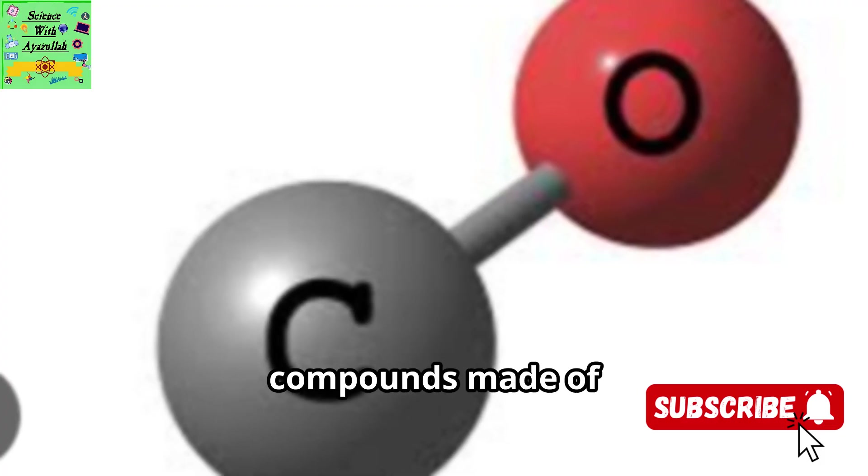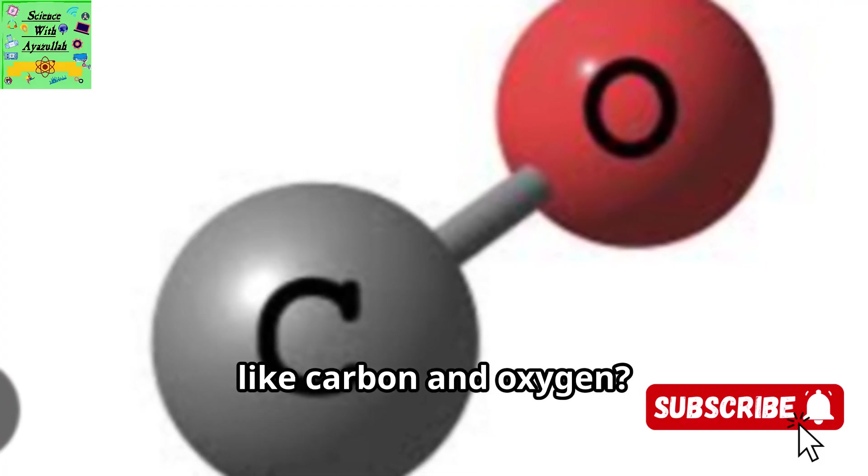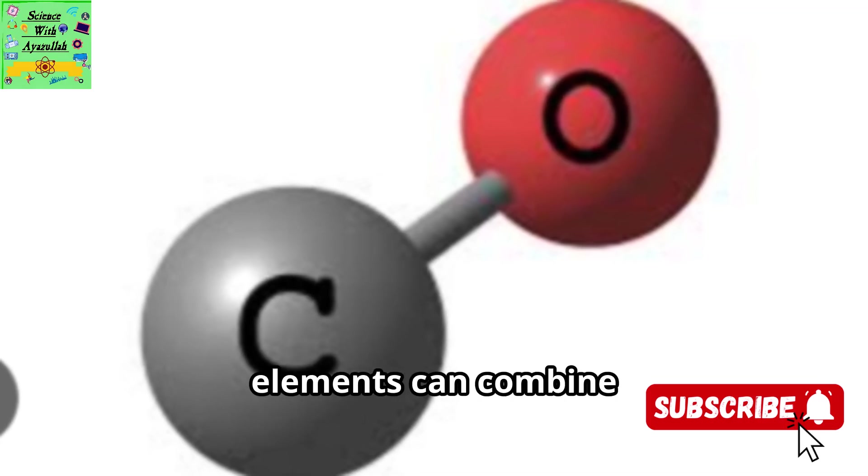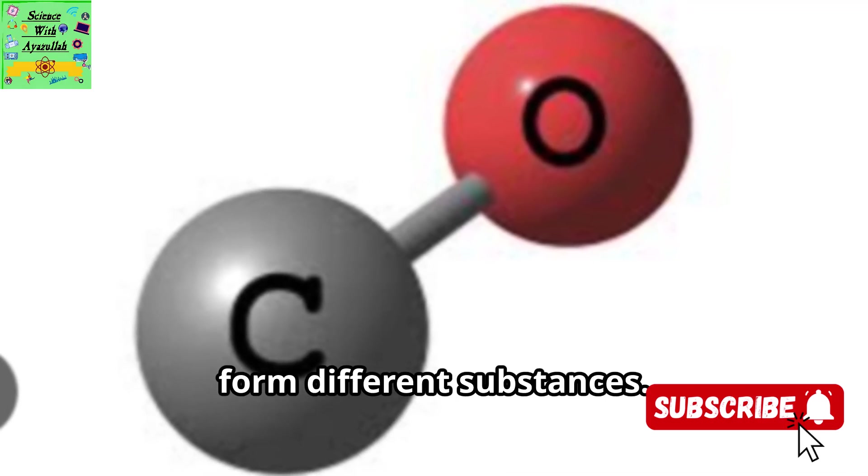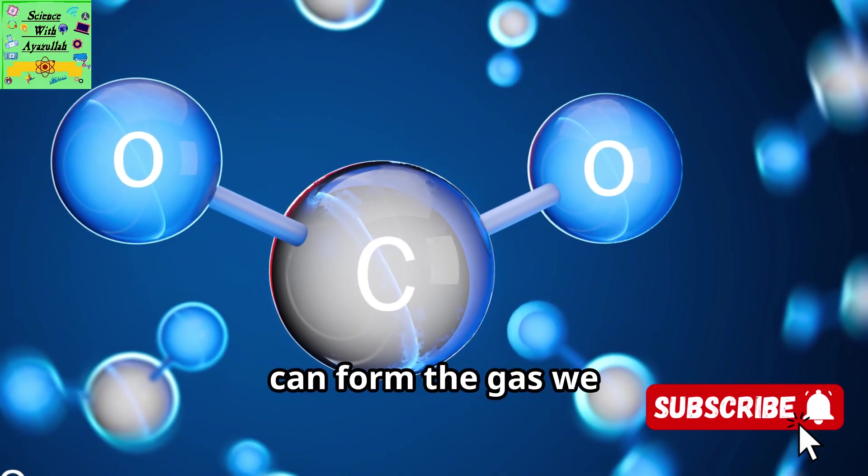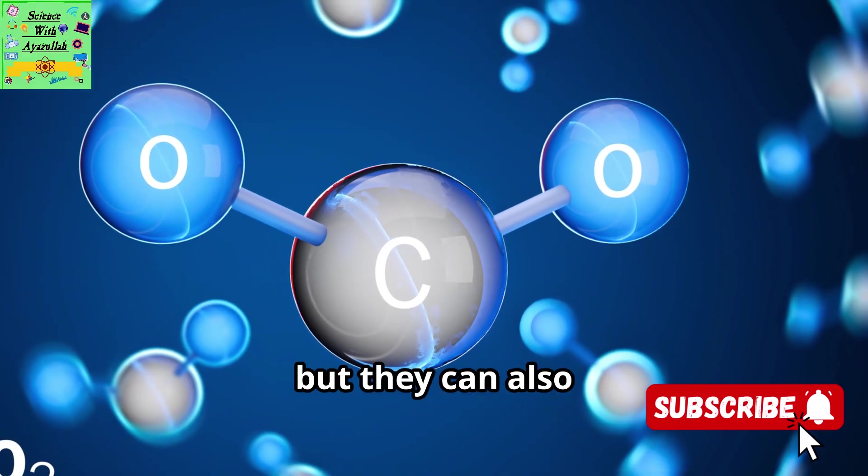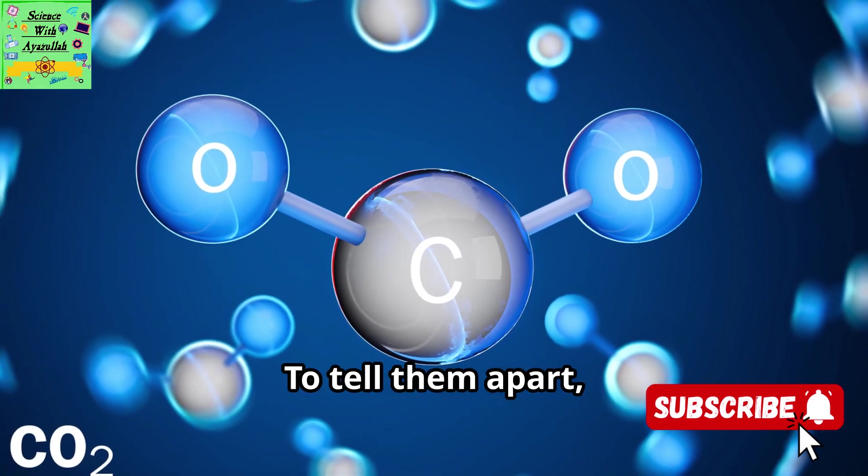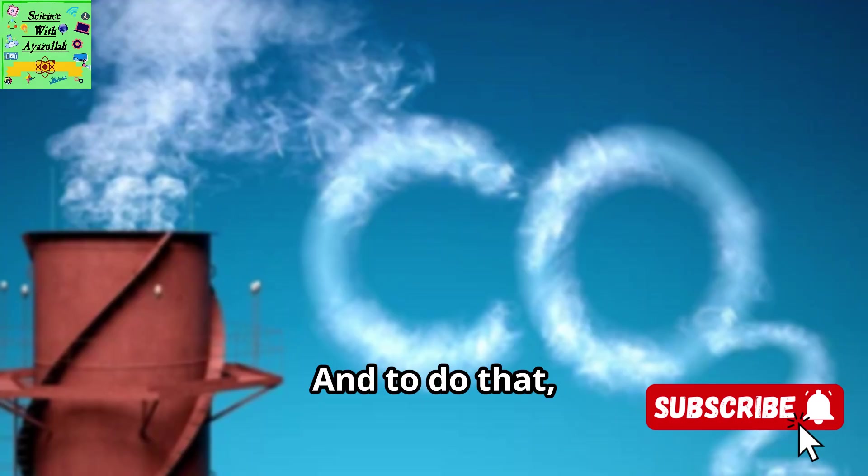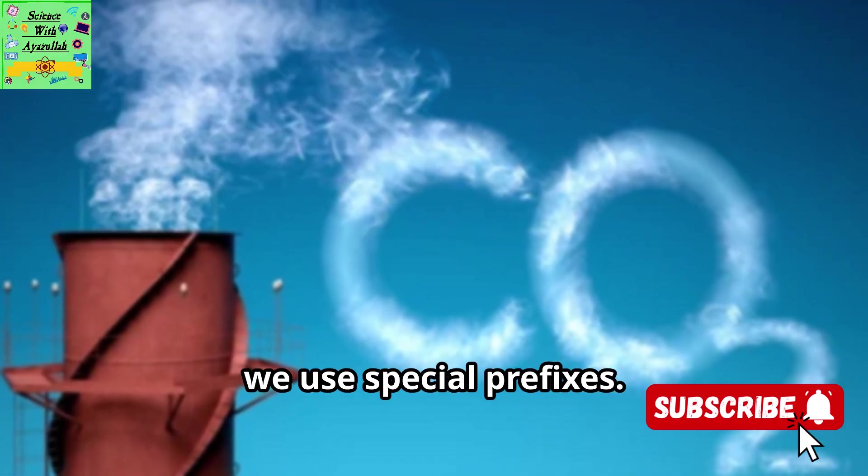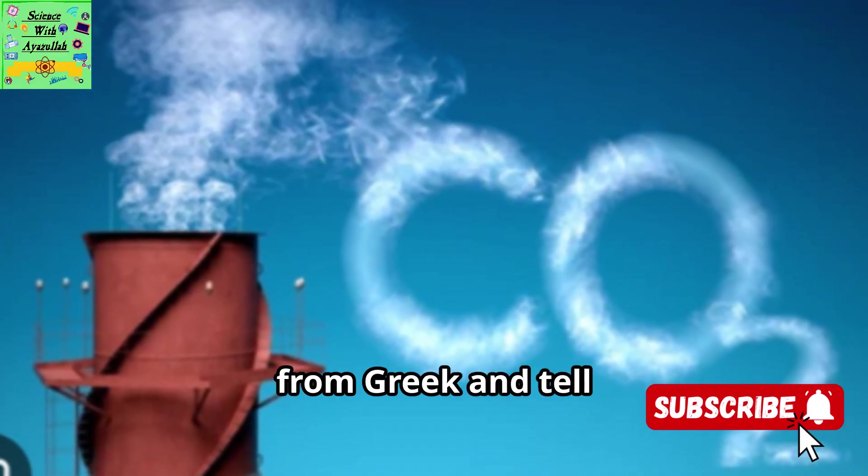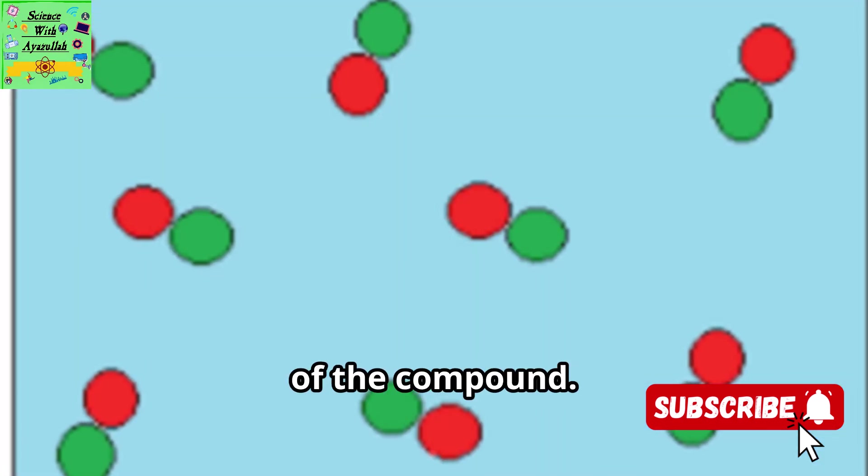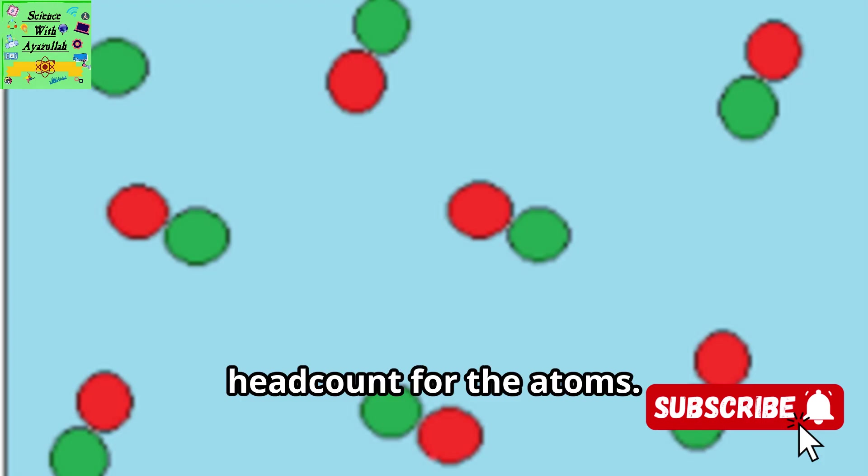Now what about compounds made of two nonmetals, like carbon and oxygen? Here, things get even more interesting because these elements can combine in different ways to form different substances. For instance, carbon and oxygen can form the gas we breathe out, but they can also form a very dangerous poisonous gas. To tell them apart, we need to count the atoms. And to do that, we use special prefixes. These prefixes come from Greek and tell us exactly how many atoms of a particular element are in one molecule of the compound. It's like giving a head count for the atoms.